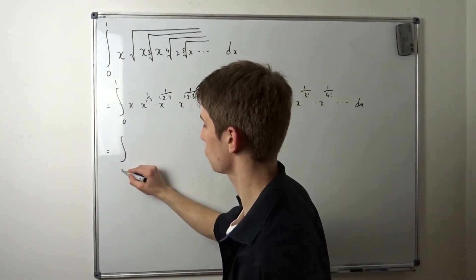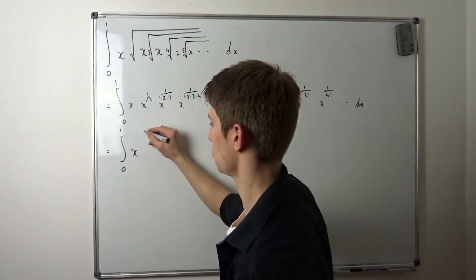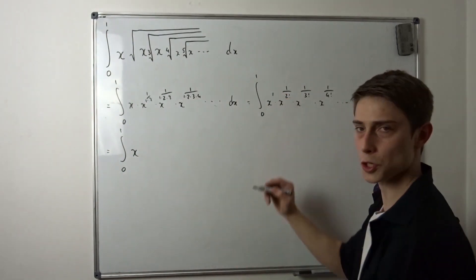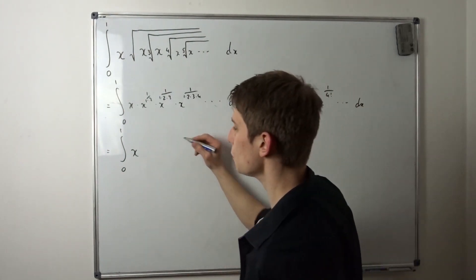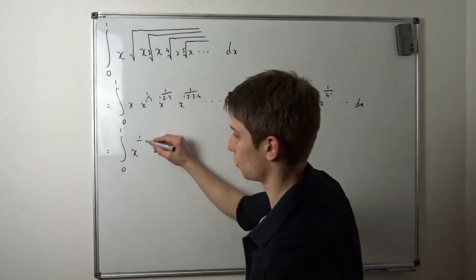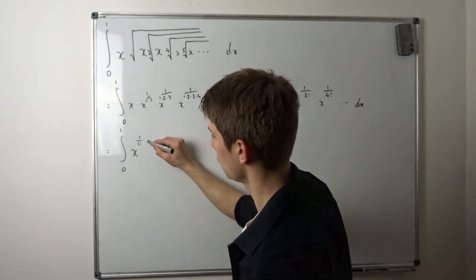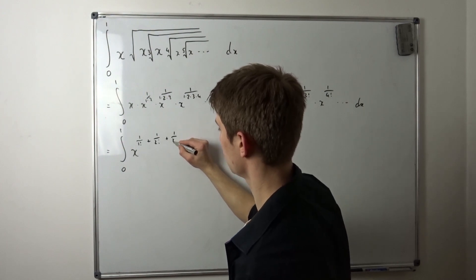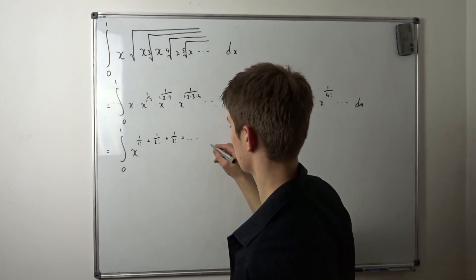So right now we've got the integral from zero to one of x to the... and x to the first power, we're going to rewrite this a little bit. So the first power is just one over one factorial. So that's one over one factorial plus one over two factorial plus one over three factorial plus dot dot dot dx.